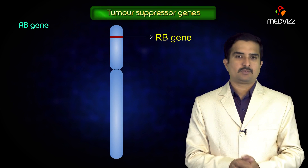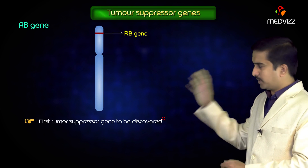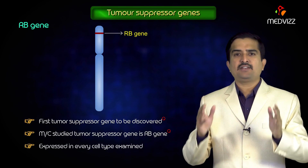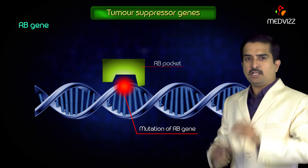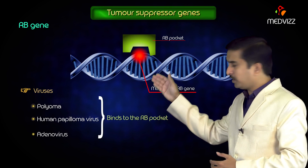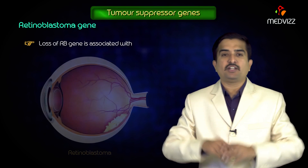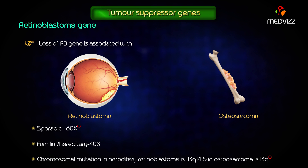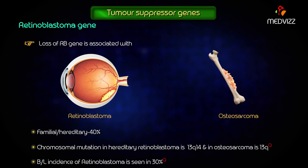The RB gene is the first tumor suppressor gene to be discovered and is also the most commonly studied tumor suppressor gene. It is expressed in every cell type examined. Mutations of the RB gene occur in RB pocket viruses such as polyoma, human papilloma virus, and adenovirus, which mainly bind to the RB pocket. Loss of the RB gene is associated with retinoblastoma and osteosarcoma. It is sporadic in 60% of cases and familial (hereditary) in 40%. The chromosomal mutation in hereditary retinoblastoma is 13q14 and 13q in osteosarcoma.